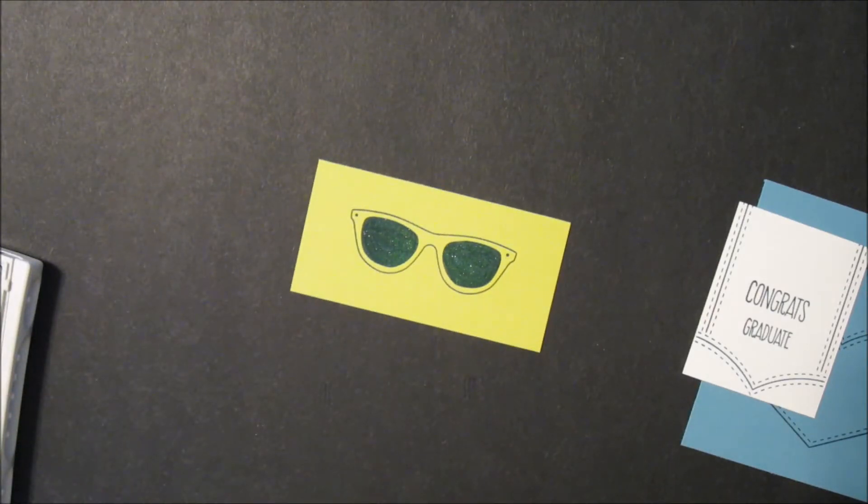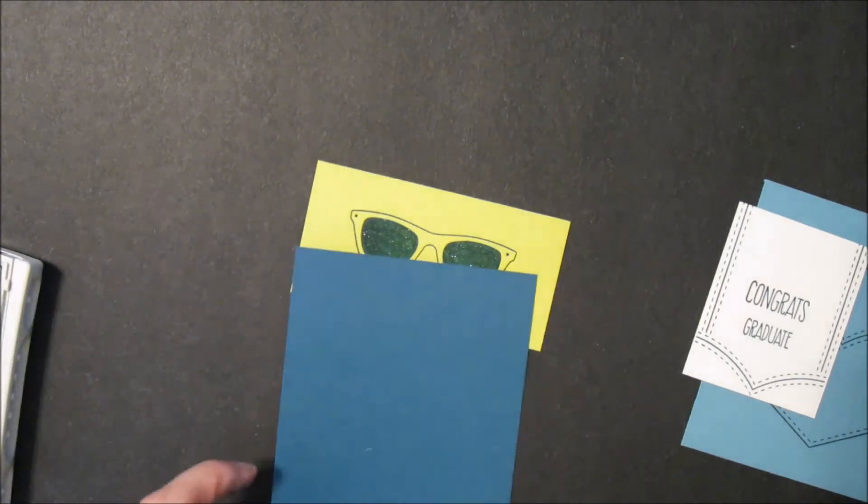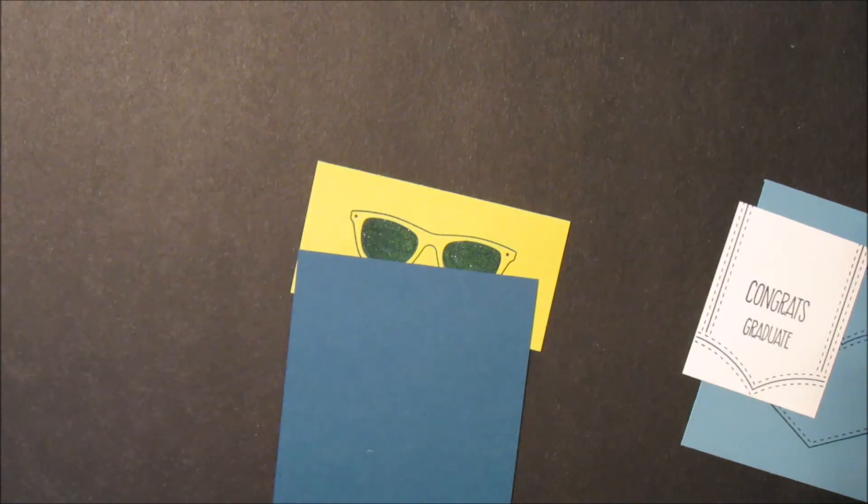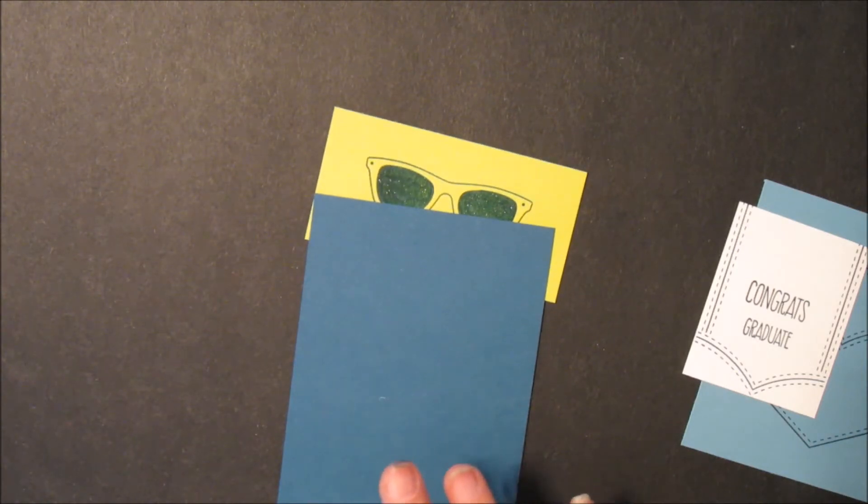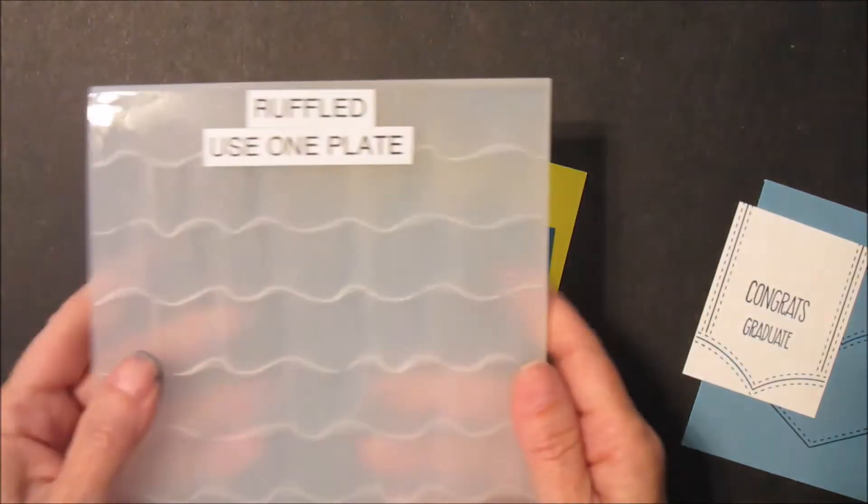Then on your piece of Dapper Denim, you're going to run that through the Big Shot with the ruffled embossing folder.